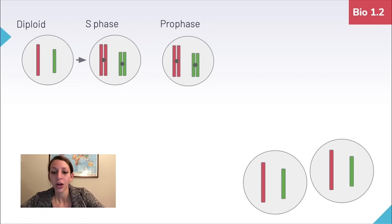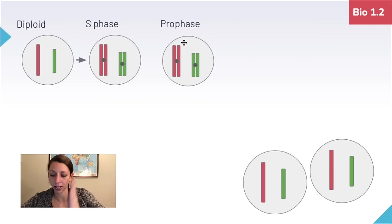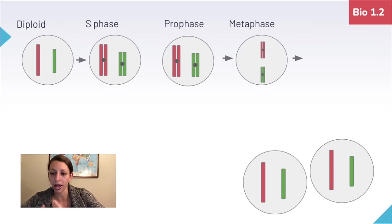Once DNA is duplicated, in prophase it condenses and gets ready for cell division. Metaphase: chromosomes line up in the middle. Anaphase: they're pulled apart. Telophase: two new nuclear membranes start to form. Then in cytokinesis, cleavage occurs and the cells are divided in half.